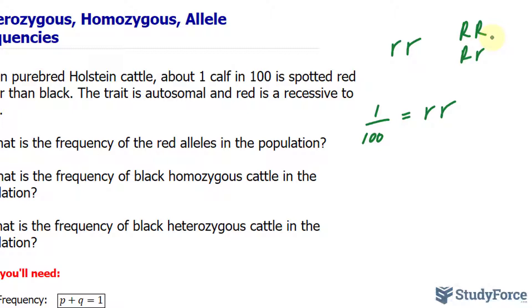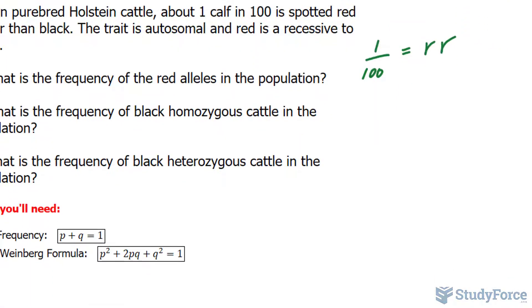They're asking, what is the frequency of the red alleles? What we have to do is use the Hardy-Weinberg formula, specifically this term, which represents the proportion of individuals who are homozygous recessive. And I'll set q squared equal to this fraction. So I have 1 over 100 is equal to q squared.